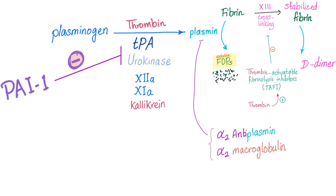Here's the whole story: plasminogen into plasmin thanks to TPA, urokinase, etc. Who inhibits this step? Plasminogen activator inhibitor. Then we have plasmin — who inhibits it? Alpha-2 antiplasmin and alpha-2 macroglobulin. Then we have fibrin to fibrin degradation products and stabilized fibrin to D-dimer — who inhibits this step? Thrombin activatable fibrinolysis inhibitor, which needs thrombin to be activated because it's called thrombin activatable.